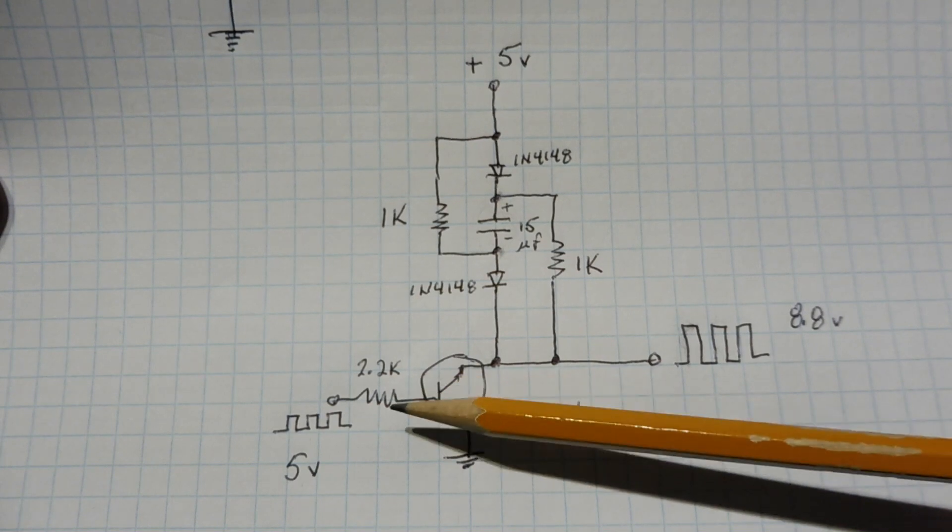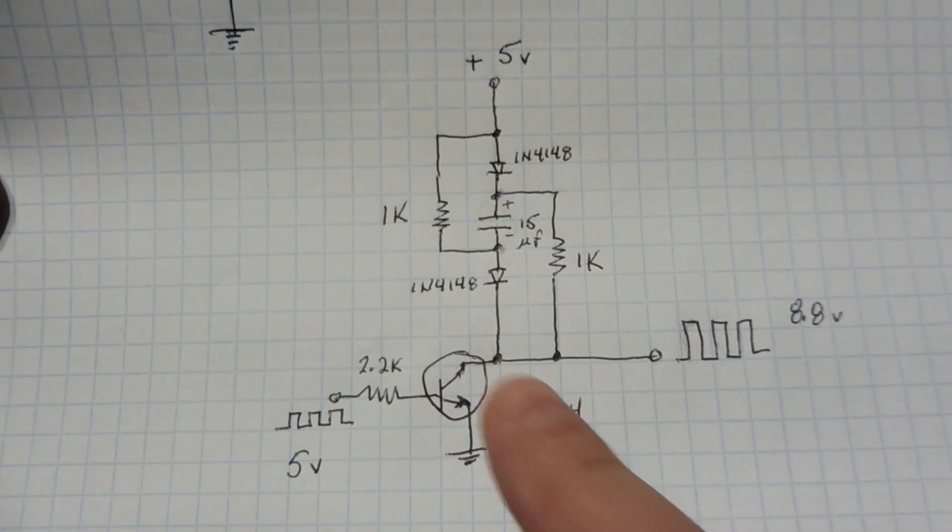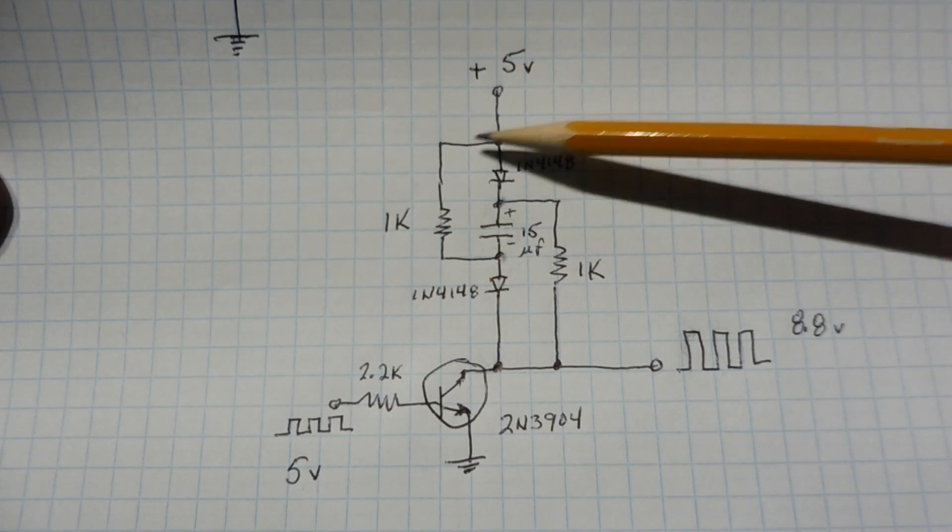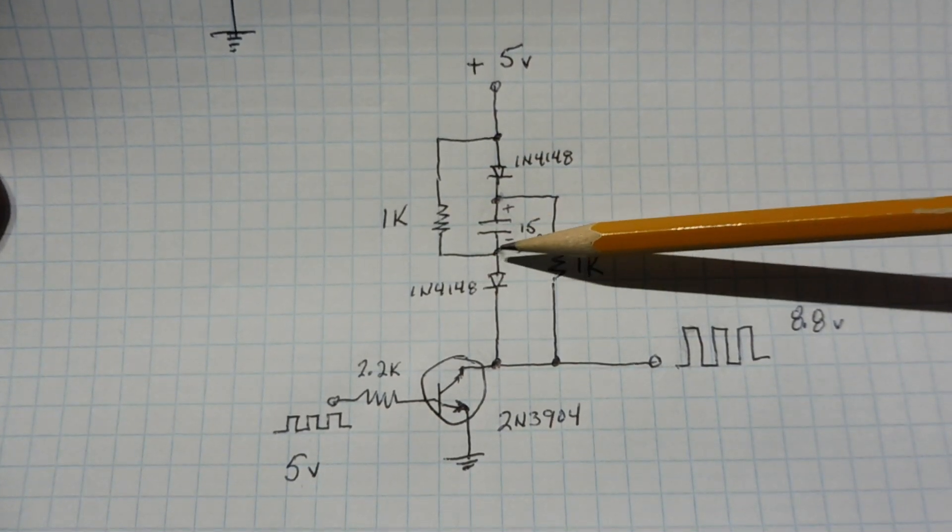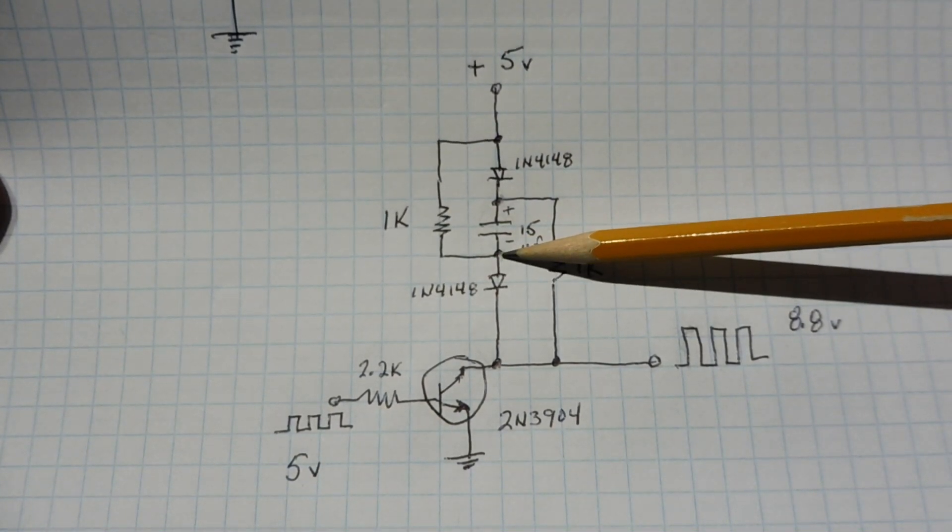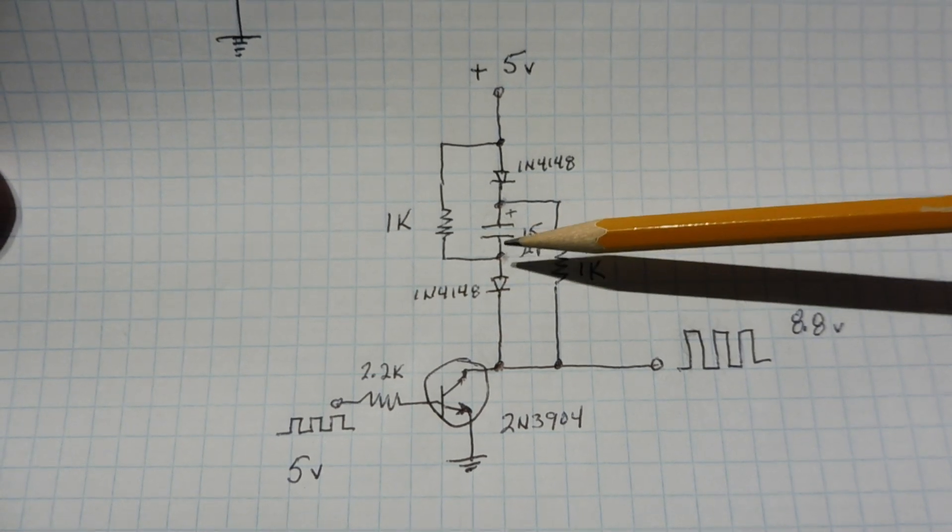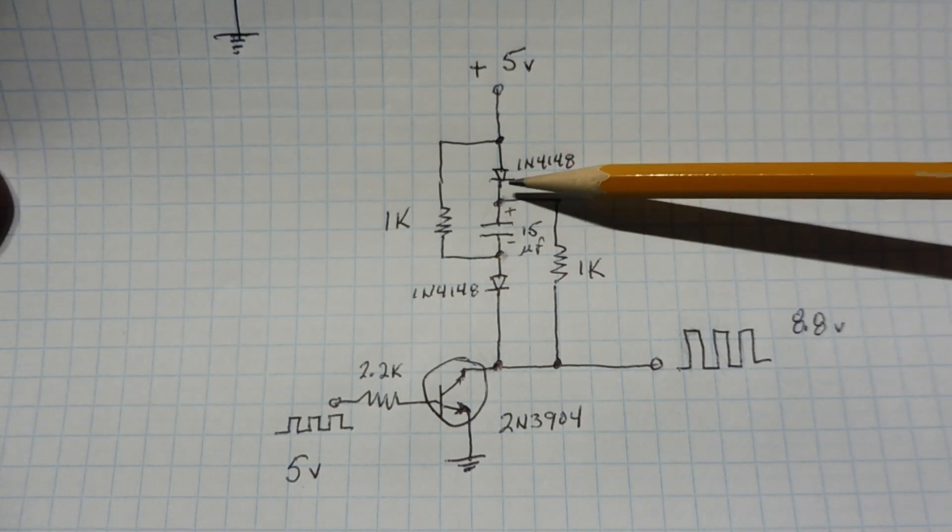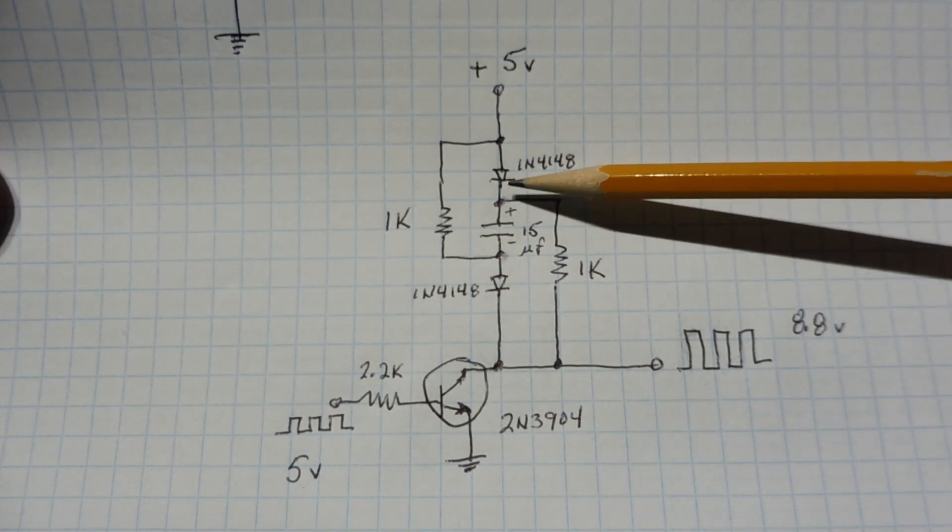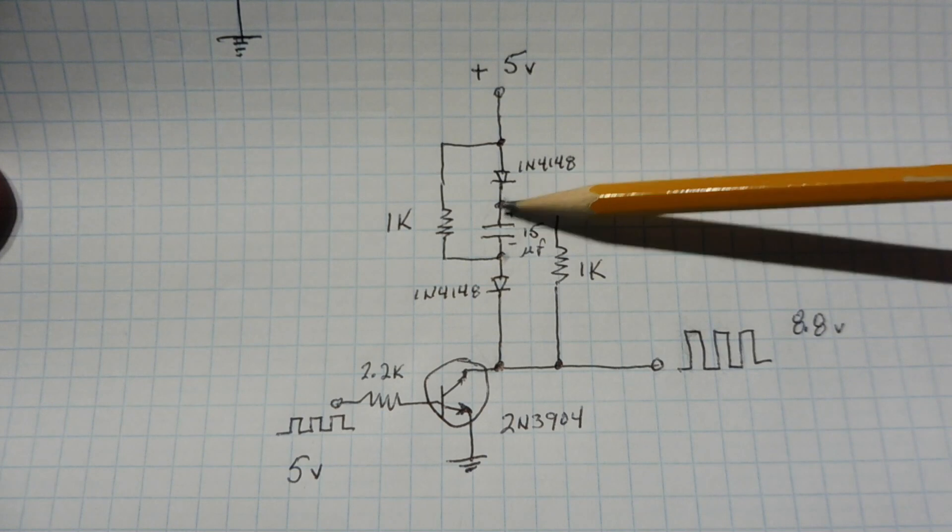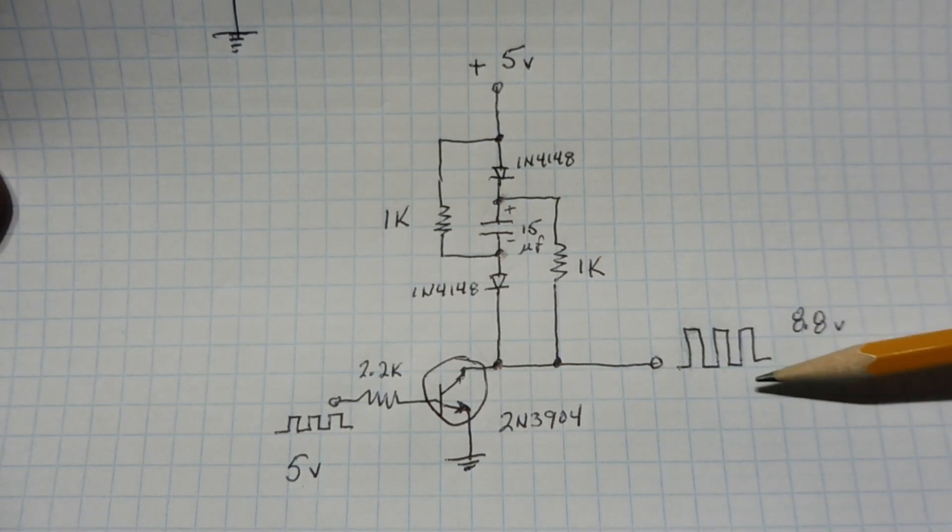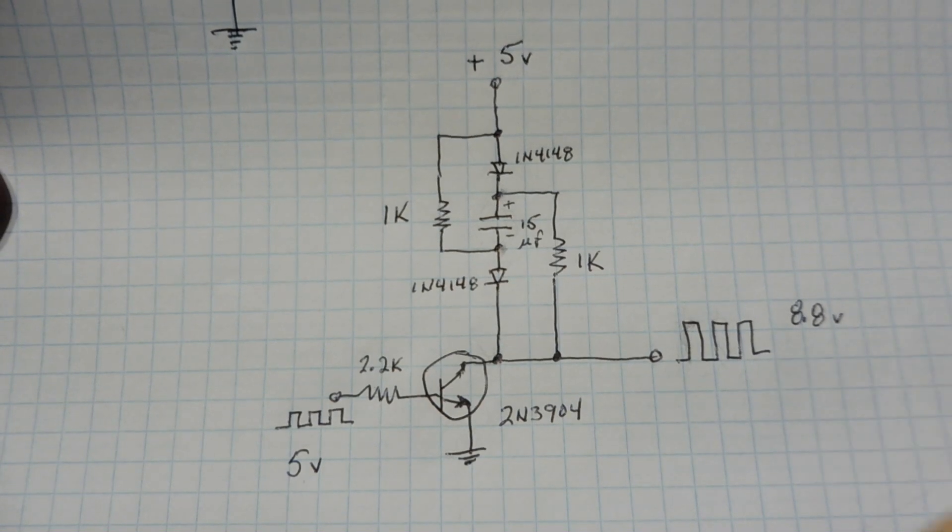So now when the clock goes low, this transistor will shut off, so we can take it out of the circuit. Now we're going to have 5 volts from the power supply fed through this 1k ohm resistor to the bottom of the capacitor, so this point now will jump up by 5 volts. Now if this point jumps up by 5 volts, this point will also have to jump up by 5 volts, and since it's got 3.8 volts already across it, it's going to jump up to 8.8 volts, which is fed through the 1k ohm resistor to the output.